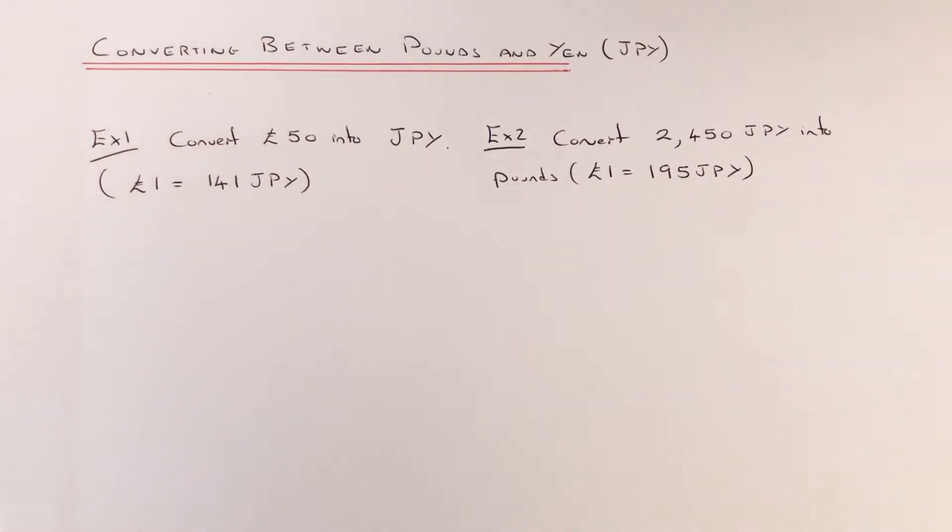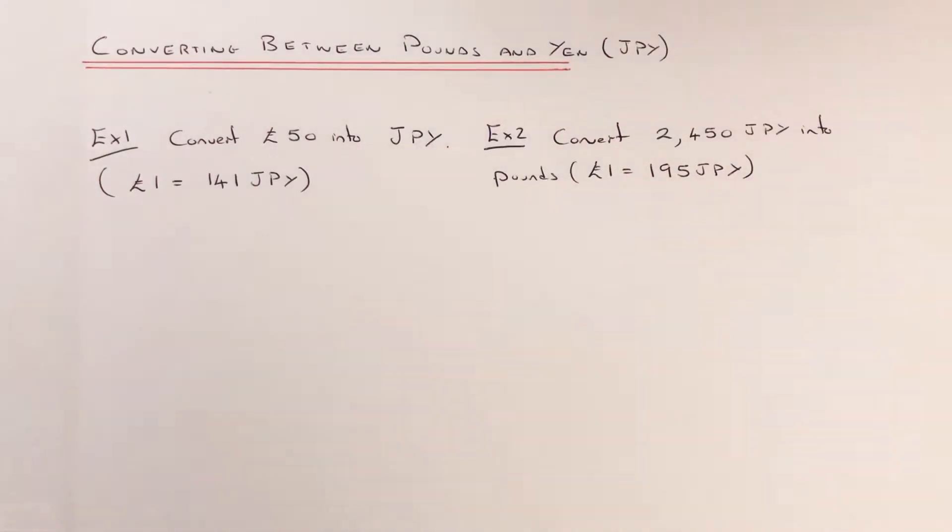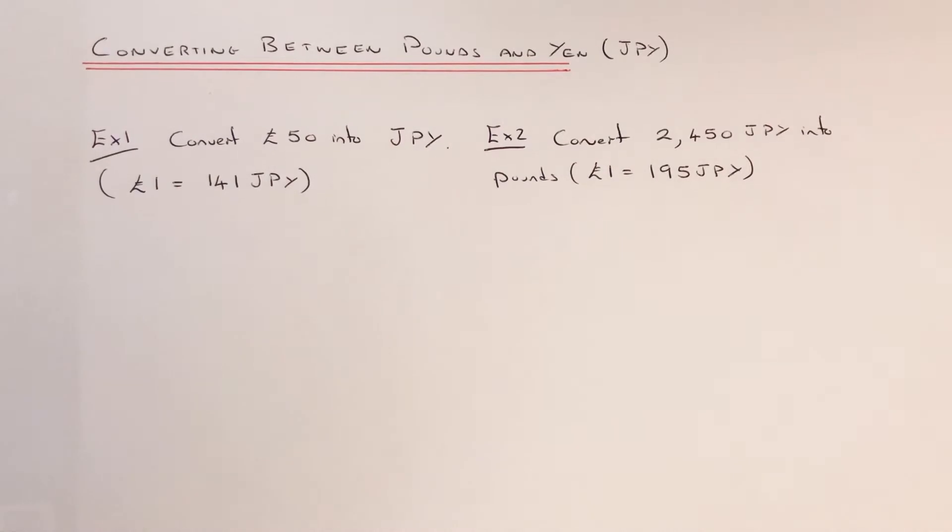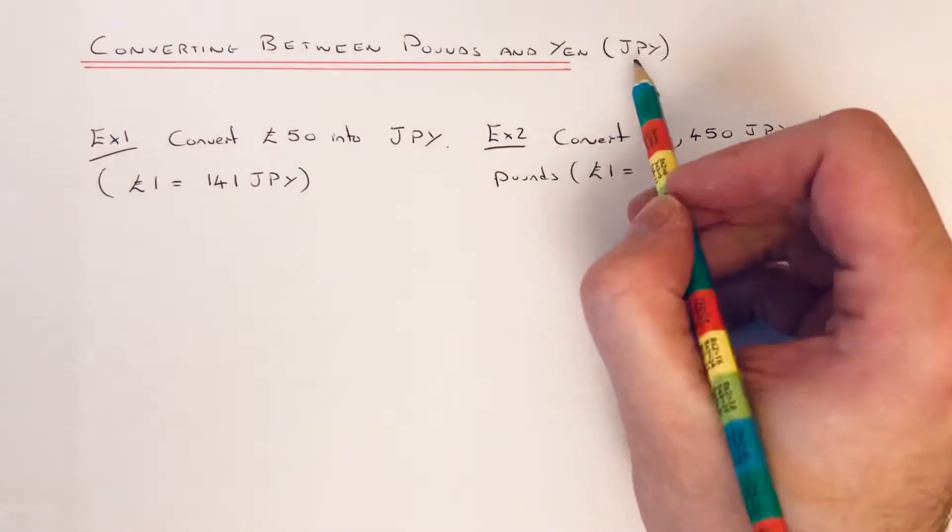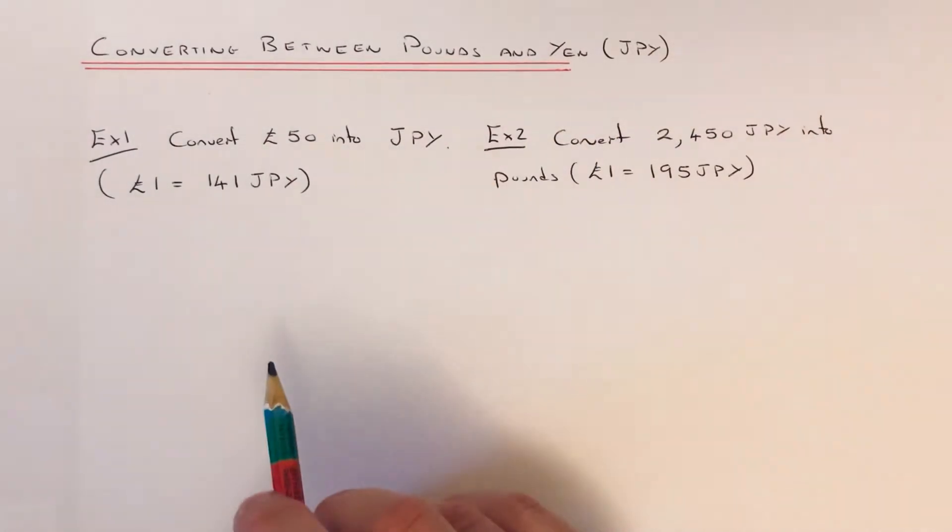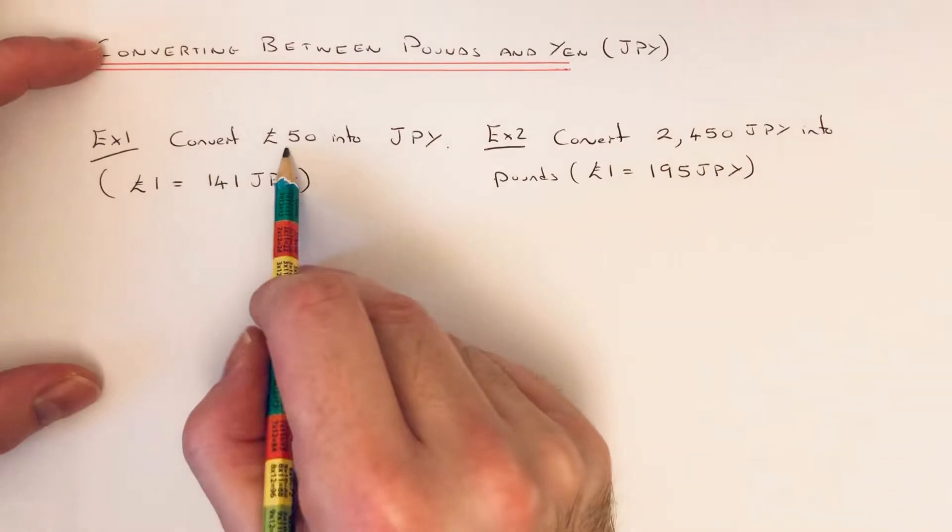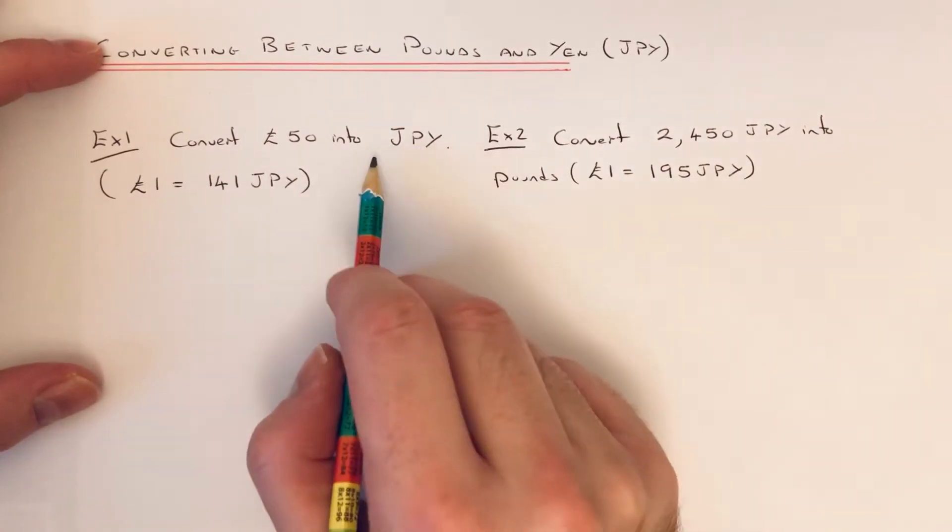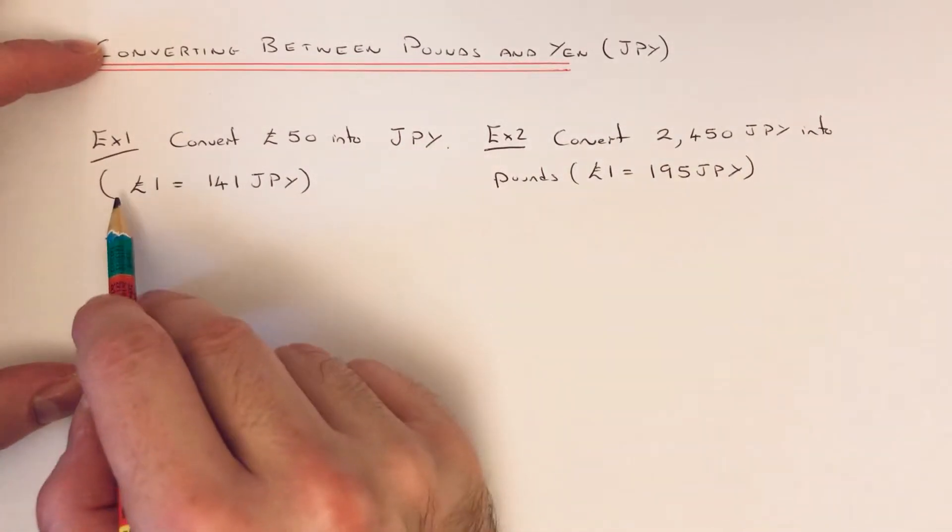Hi guys, welcome back. This is Maths 3000. Today I'm going to be converting between pounds and the Japanese yen, which you can write as JPY. So we've got to convert £50 into Japanese yen, and the exchange rate is £1 equals 141 Japanese yen.